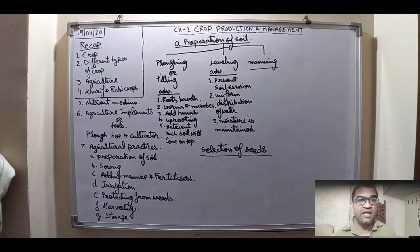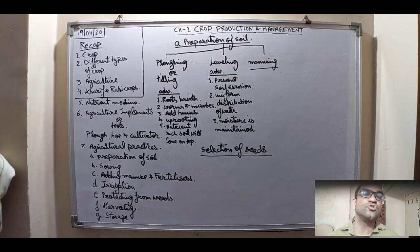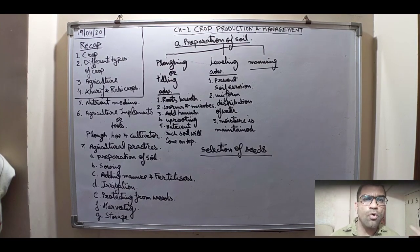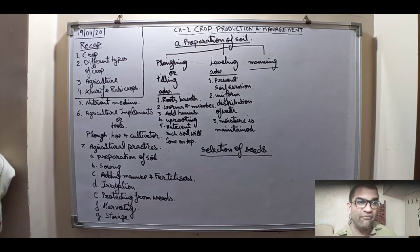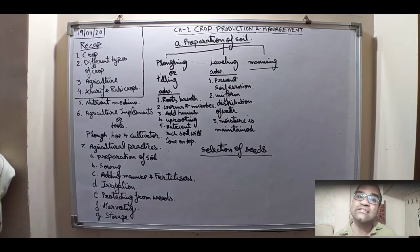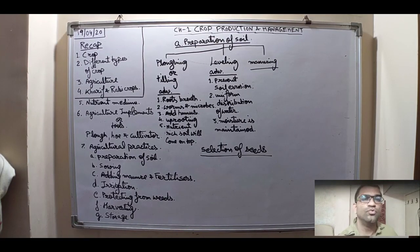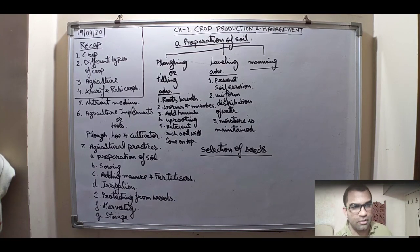The second step is the sowing of seeds, but before that we need a good selection of seeds. To have a good yield of crops, we need good seeds. To select seeds, farmers put all the seeds in a bucket of water.